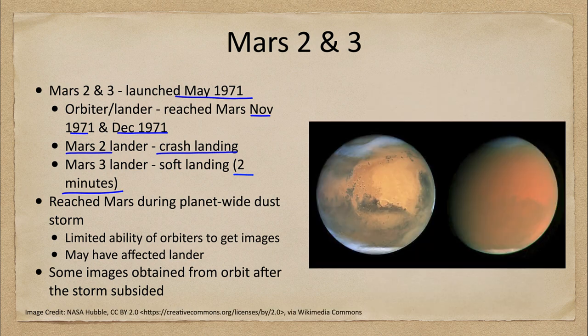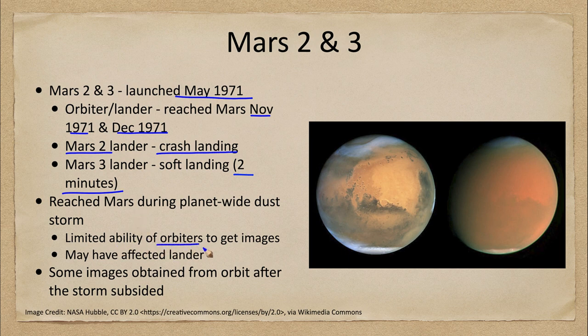One of the problems was that it reached Mars during a planet-wide dust storm. These do happen from time to time. Here is a Hubble image showing the dust storm — this was a different dust storm, much more recently. On the left-hand side we can see features on Mars: structures, craters, lighter and darker areas. On the right-hand side, all we see is everything in a haze because of the amount of dust. We get dust storms here on Earth but they're generally localized; on Mars they actually become planet-wide, and that limited the ability of the orbiters to get any images.